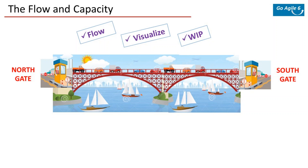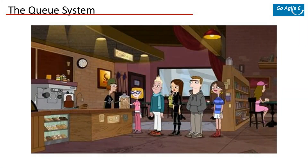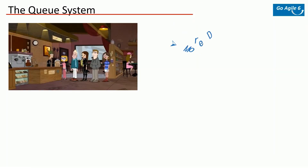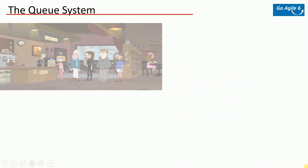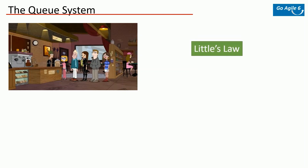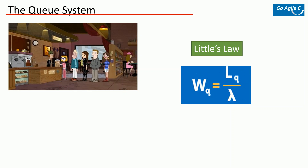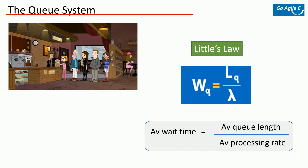Now let's study the queue system. Imagine a coffee shop where customers walk in to order coffee. When more and more people come in, the queue becomes longer, which directly translates to delays, increased wait time, compromised coffee quality, wrong orders, and a demotivated person making the coffee. In IT projects, you try to reduce wait times. Professor John Little developed a formula to measure average wait time: take the average queue length and divide it by the average processing time — known as Little's Law. The key takeaway: longer queues lead to longer wait times.